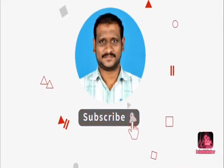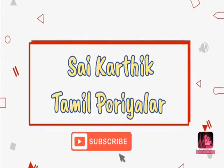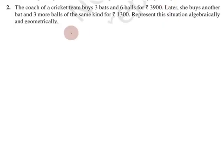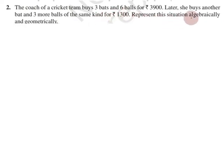Subscribe now and press the bell icon — never miss an update. Problem number 2: The coach of a cricket team buys 3 bats and 6 balls for 3,900 rupees. Later, she buys another bat and 3 more balls of the same kind for 1,300 rupees. Represent this situation algebraically and geometrically.